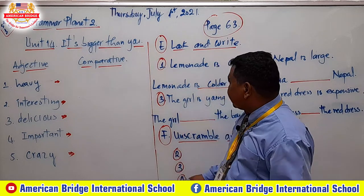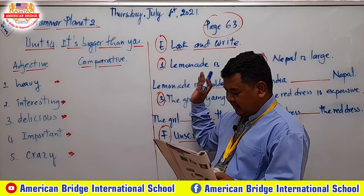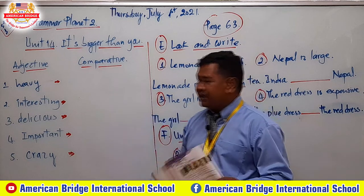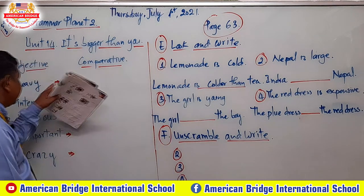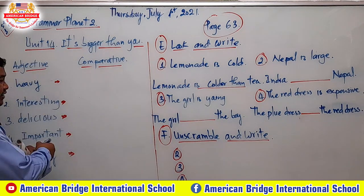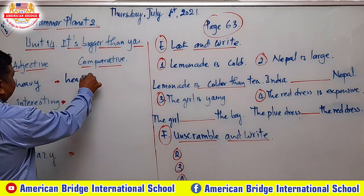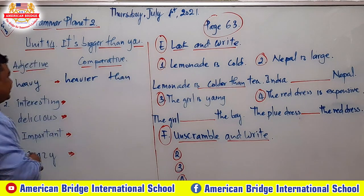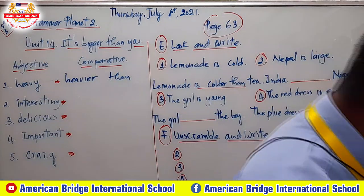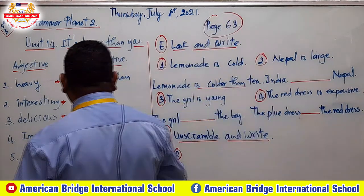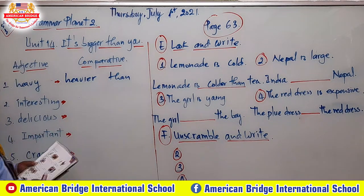Before you turn to page 63, do this with me. Take the word 'heavy.' If you want to make the comparative adjective of 'heavy,' what is it? Heavier — heavier than. So for words ending in Y, you change the Y to I-E-R. Like 'heavy' becomes 'heavier,' and 'happy' becomes 'happier.'